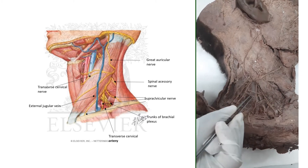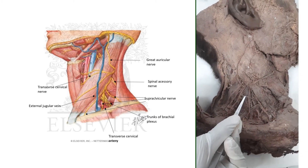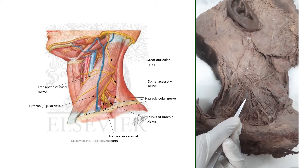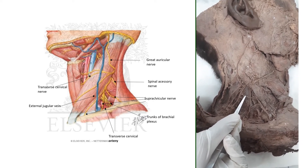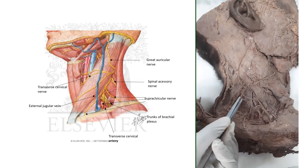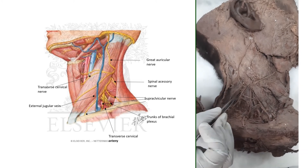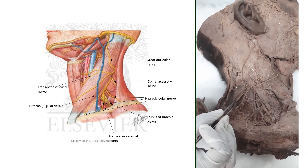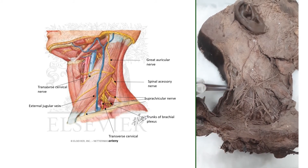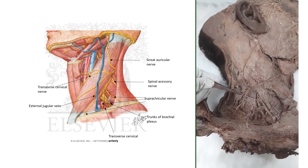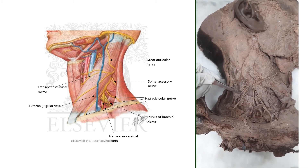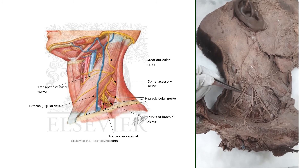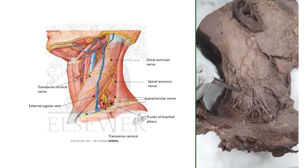Another content is the dorsal scapular nerve, which takes origin from the C5 root and runs deep to the levator scapulae muscle. We can also see branches from C2, C3, and C4 of the cervical nerves.